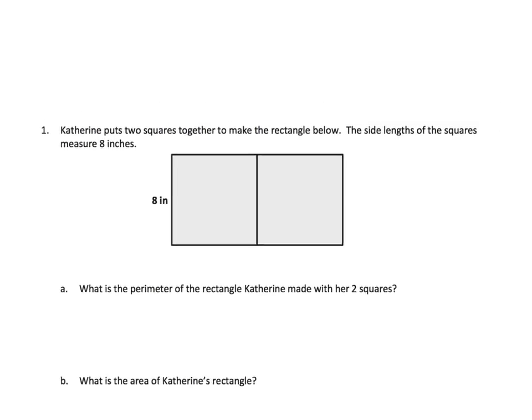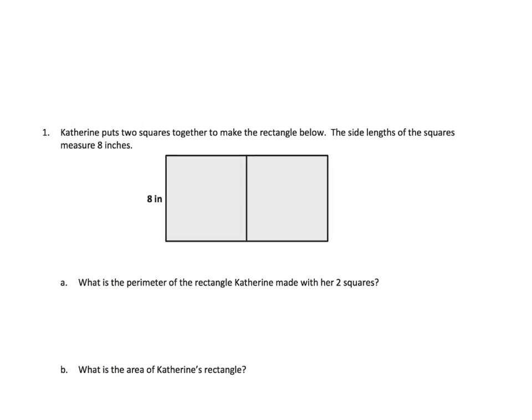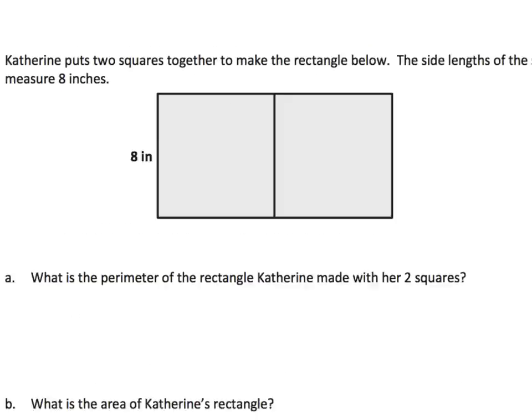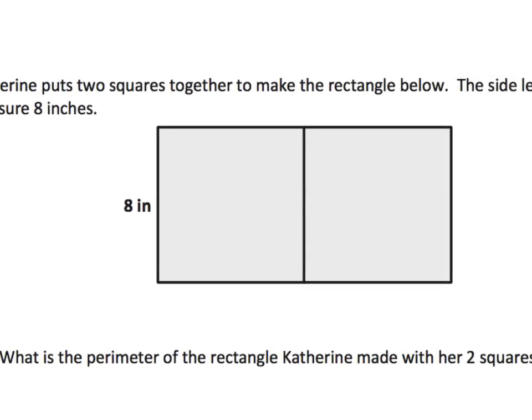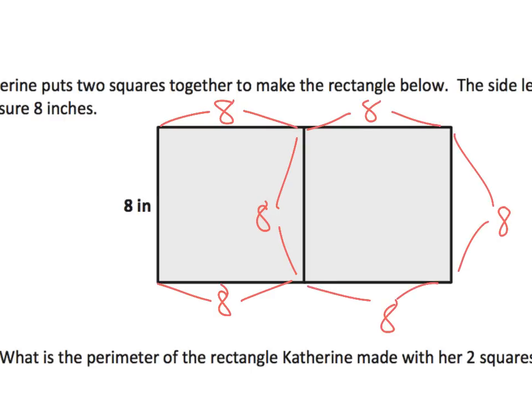Katherine puts two of these squares together to make a rectangle, and the side lengths of the squares measure 8 inches. So each of these side lengths is 8. So if I wanted to, I could zoom in and say, well, this distance here is 8, this distance here is 8, this distance is 8, because everything is—each of these are squares, so these are all eights.